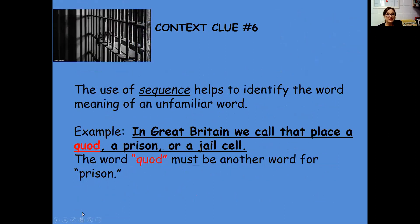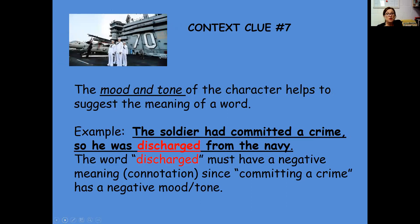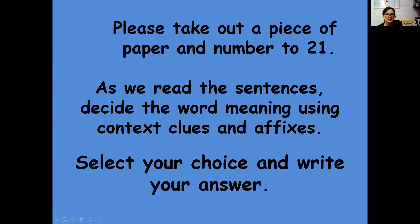Let's look at number six. Sometimes the author might use sequence to help identify the word meaning. In Great Britain, we call a place a quad — a prison or jail cell. So you know what the word 'quad' means. Mood and tone can also help you figure out word meaning. The soldier had committed a crime, so he was discharged from the Navy. The word 'discharge' must have a negative connotation because he committed a crime — so you know it's not good to be discharged.